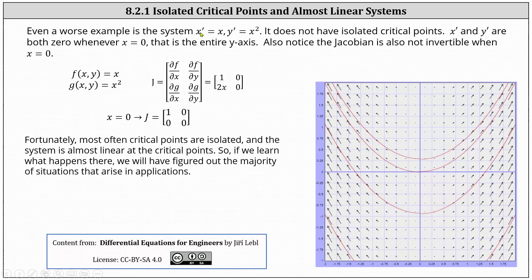An even worse example is the system given by x prime equals x and y prime equals x squared, where the phase portrait is graphed below. Notice both x prime and y prime are zero when x is zero, which means y can take on any value. Analyzing the phase portrait, notice any point on the y-axis would be a critical point, and therefore the system does not have isolated critical points. If we zoomed in on any point on the y-axis, we would find additional critical points along the y-axis where x equals zero. Also notice the Jacobian is not invertible when x equals zero. The Jacobian matrix is the two by two matrix with entries one, zero, two x, zero. When x is equal to zero, we have entries one, zero, zero, zero, which is not invertible.